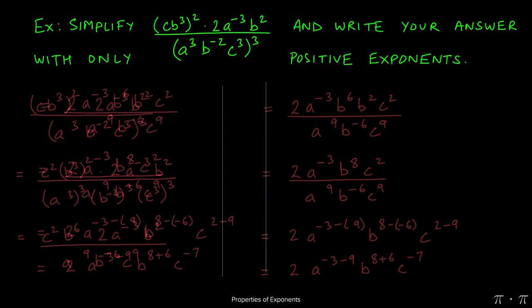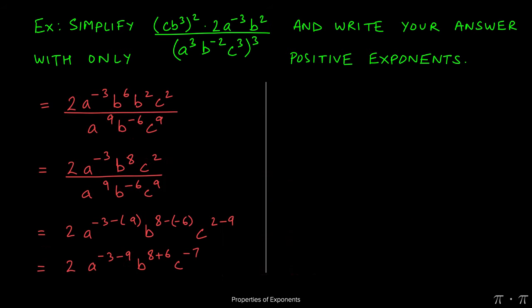Let's copy this over to the next page. Now we can combine or simplify the powers to get two a to the negative 12, negative three minus nine will be negative 12, eight plus six will give us 14, and negative seven stays as is.